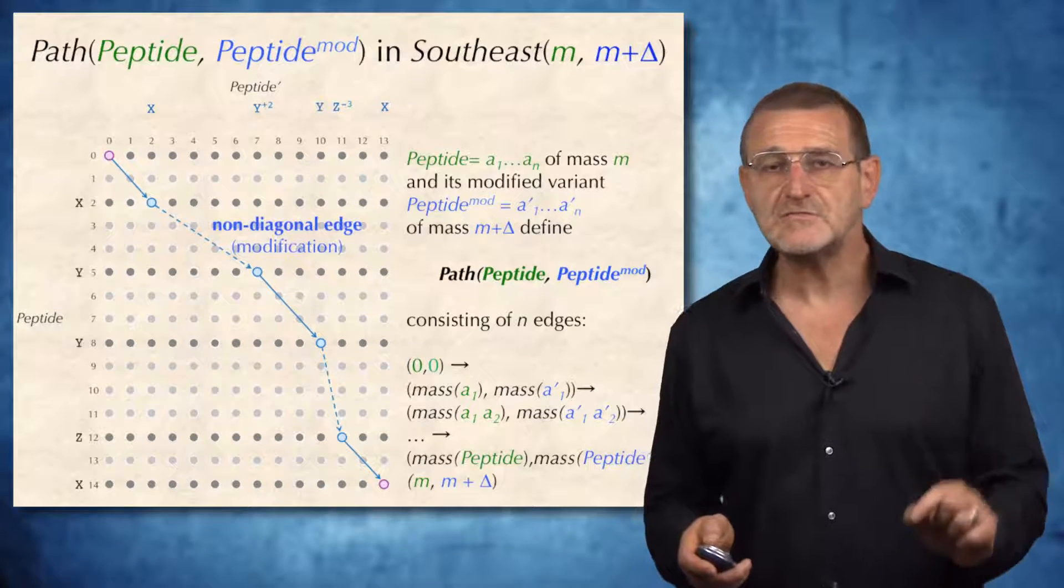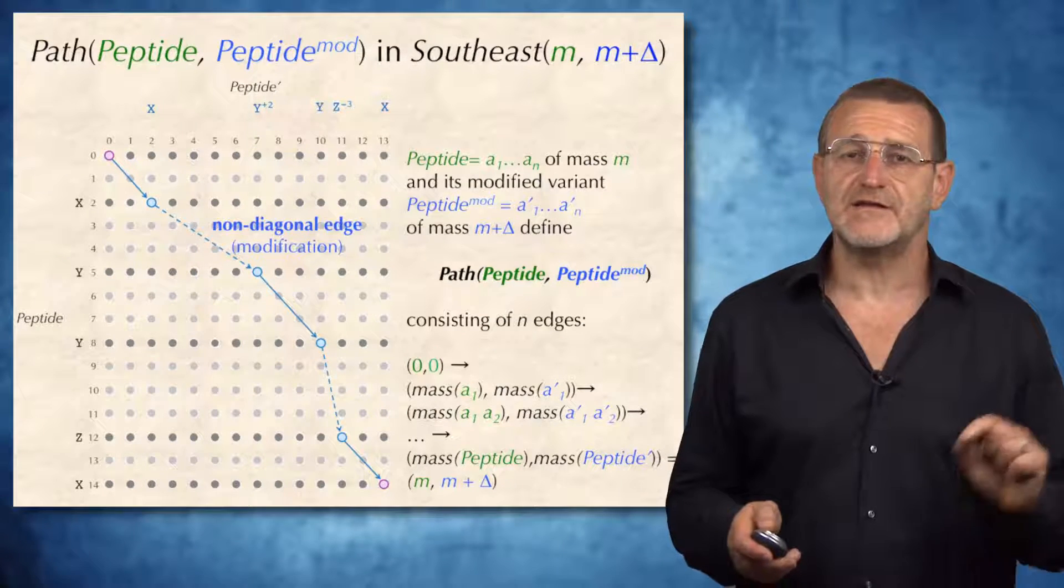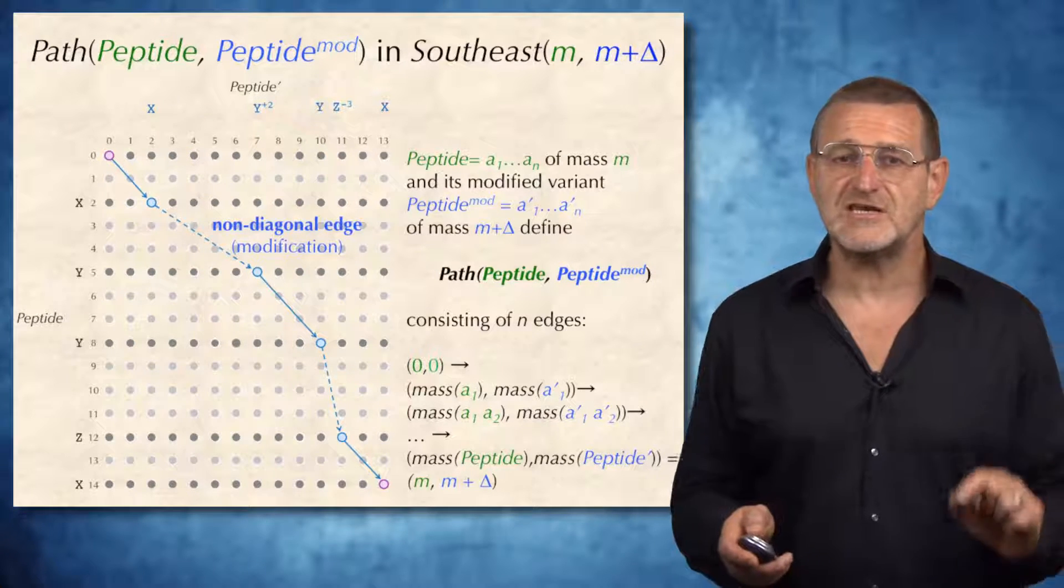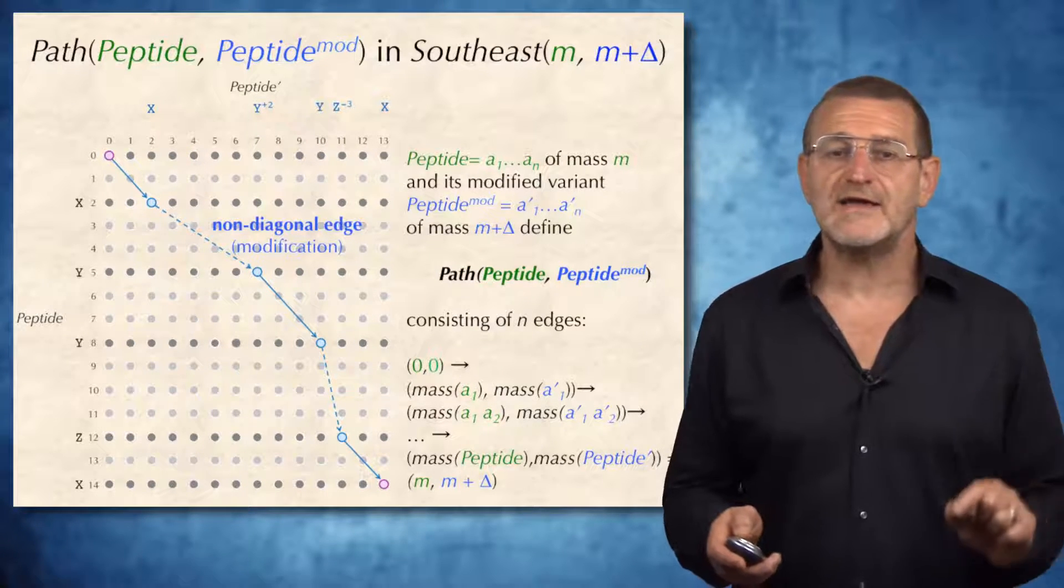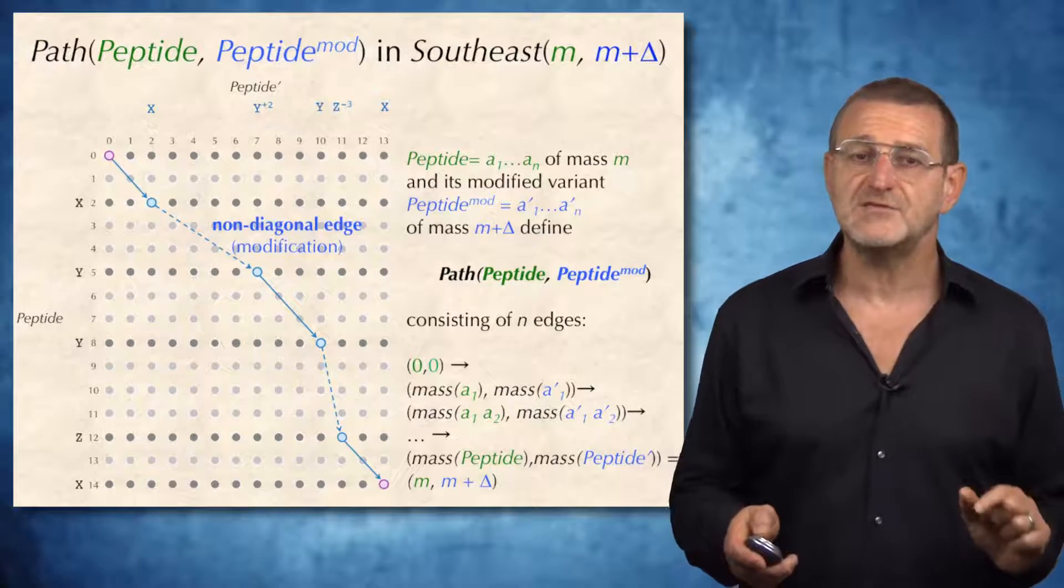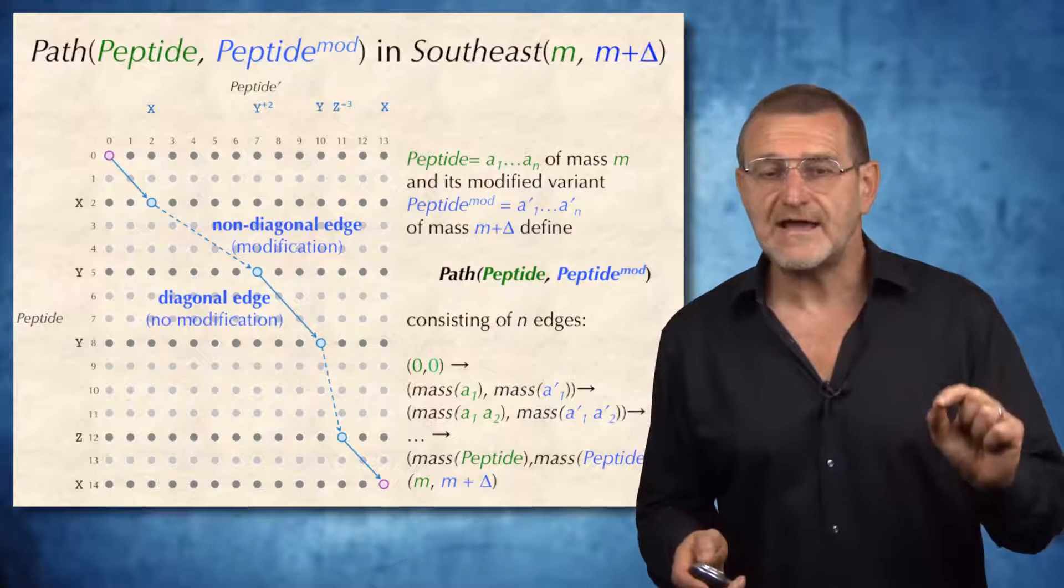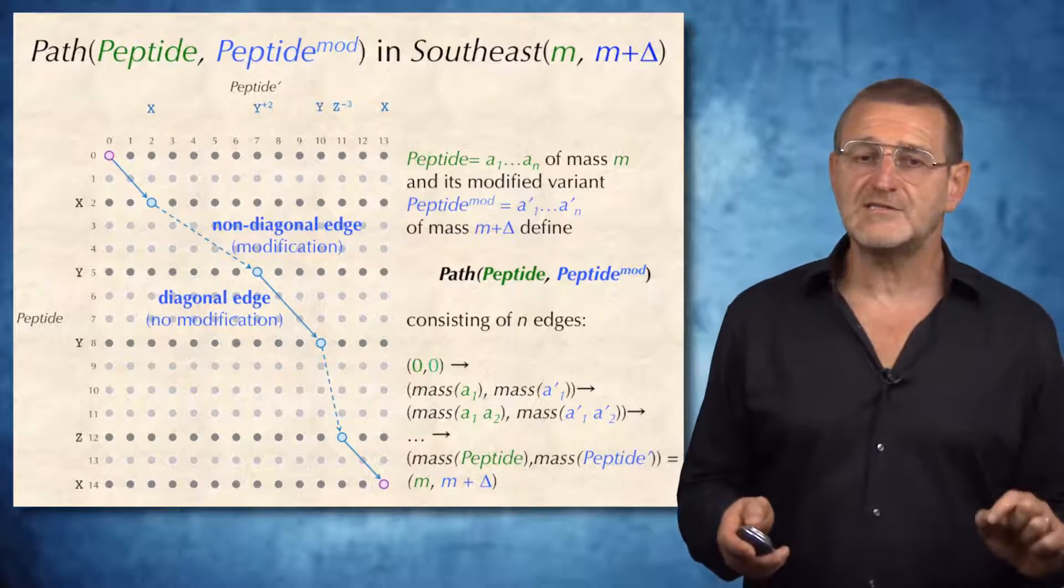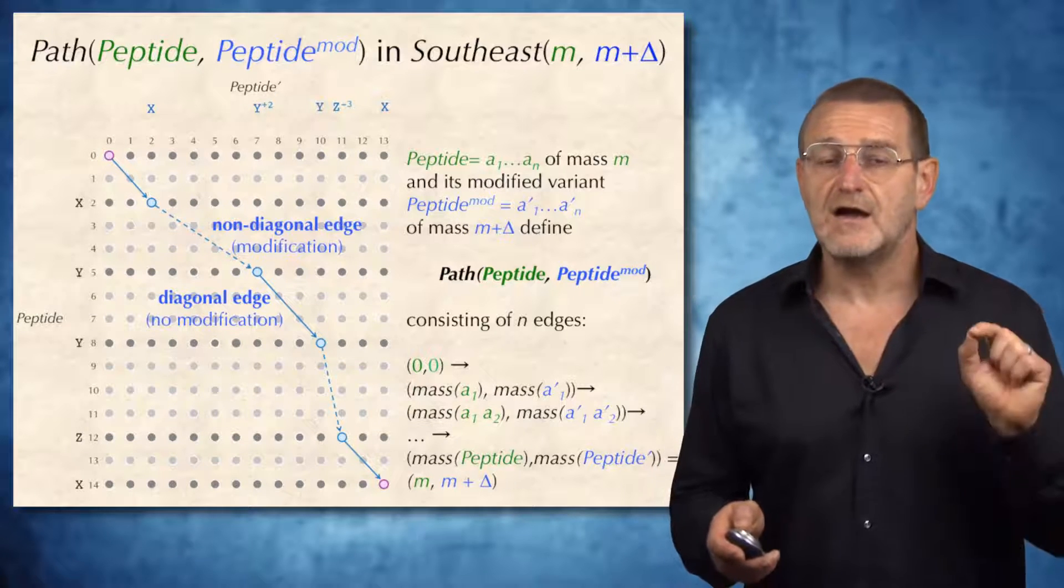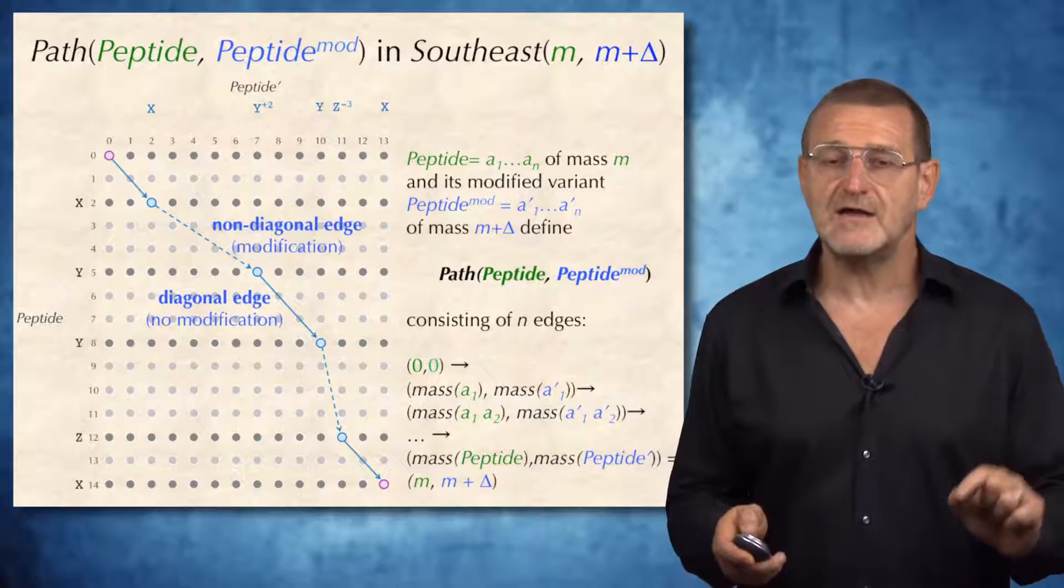We will also distinguish between two types of edges in the resulting graph. The ones that are showed by dashed edges are non-diagonal edges, and these are edges corresponding to modifications. They are non-diagonal because modification has happened. And this is an example of a diagonal edge. There is no modification, and the mass of amino acids in unmodified peptide and in modified peptide are the same.